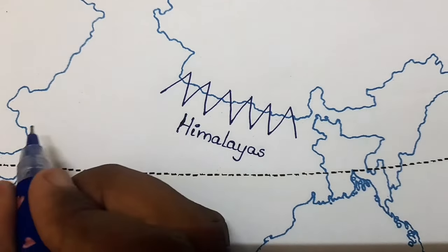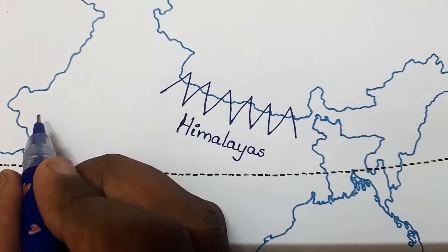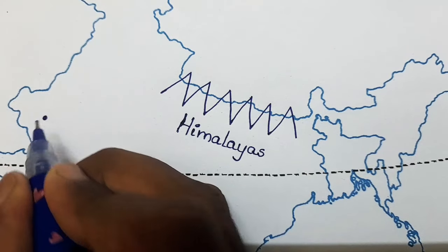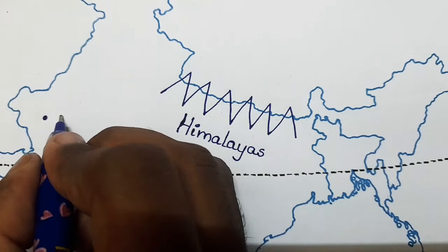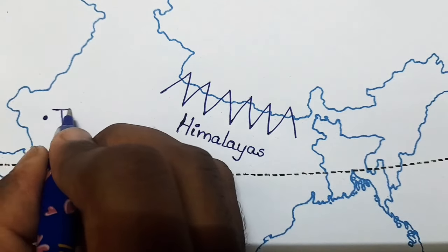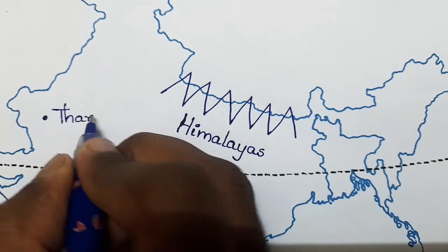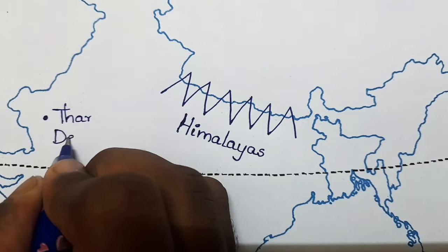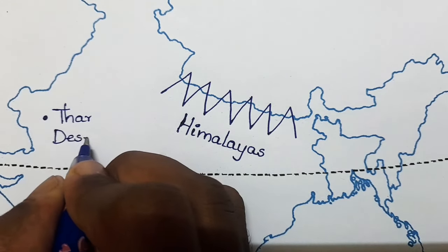Next, the Thar Desert, which is in the place of Rajasthan state. Here we can make a small dot and point it as Thar Desert.